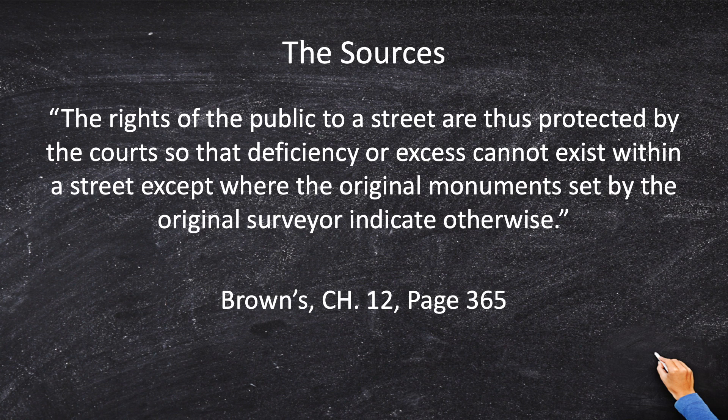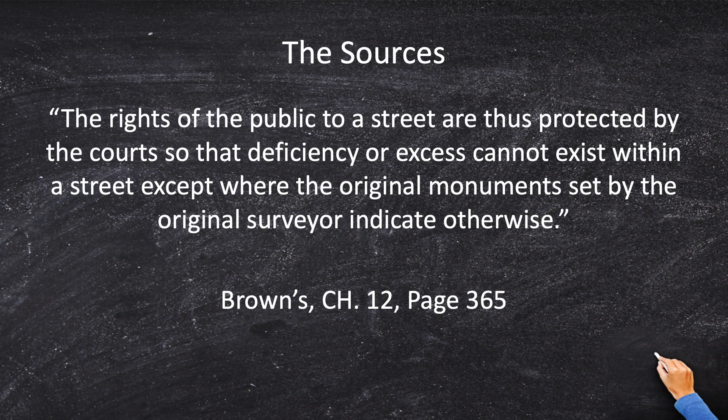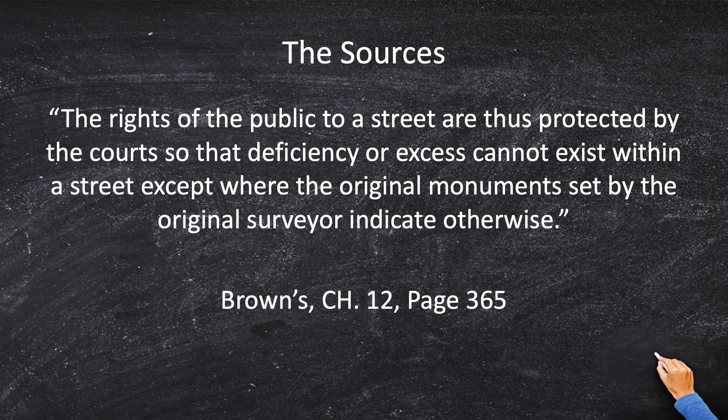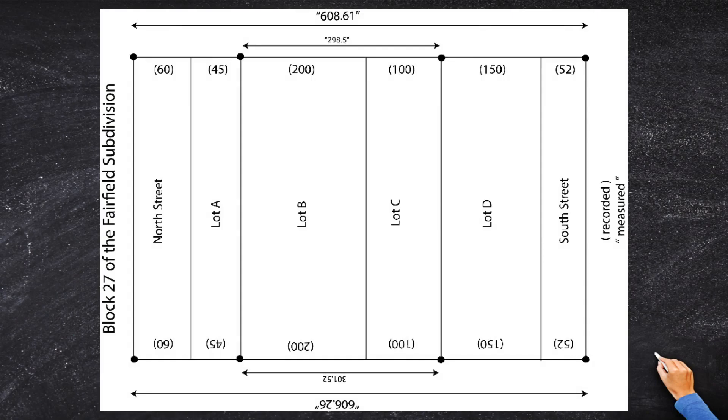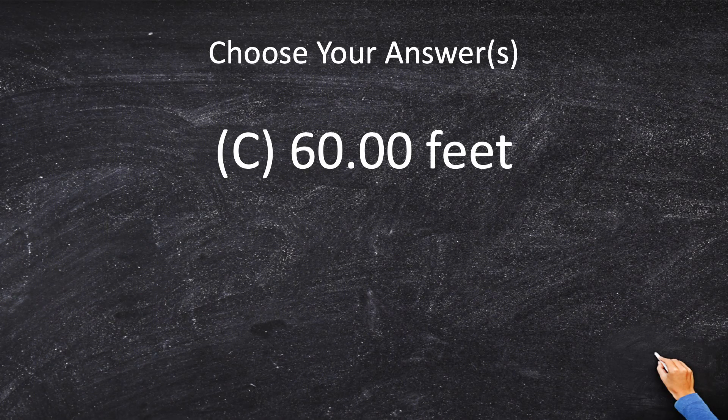What Mr. Robillard means by that is that if we had North Street and it was bounded by four monuments, then we would consider those monuments to be sacred, and we would hold whatever distance the monuments told us to hold. On the other hand, if we only have two monuments like we have here, then we are going to presume that North Street is exactly 60 feet, and we are also going to presume that South Street is exactly 52 feet wide. And therefore, the answer is C, 60.00 feet.